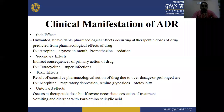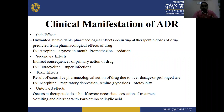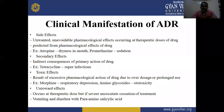Next are unwanted or untoward effects — occurring at therapeutic doses but severe enough to necessitate stopping treatment. Example: vomiting and diarrhea with para-aminosalicylic acids. Examples of drugs in the para-aminosalicylic acid category include mesalazine, balsalazine, and olsalazine.